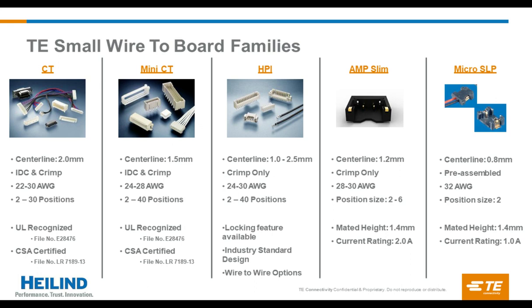CT and Mini-CT are what we call our premier product family — they have the most robust design, the most product options, and are the lead-in product of choice from TE as you consider discrete wire solutions. HPI is our high-performance interconnect solution, giving a wide variety of choices from a centerline, position count, and wire use option. It's also an industry standard design, so in many cases it's a drop-in replacement for many competitor products, and also offers unique design considerations such as locking features and wire-to-wire options. AmpSlim and Micro-SLP are our micro-miniature wire-to-board product families, both with a very low mated height of less than 2 millimeters, still offering the ability to bring low power into your board and design.